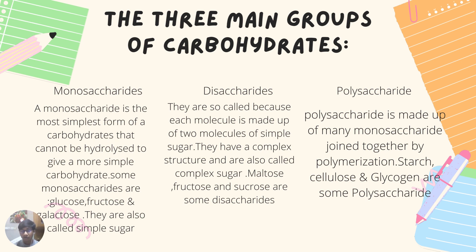Disaccharides are also known as complex sugars, and each molecule is made up of two molecules of simple sugars. Maltose, lactose, and sucrose are some disaccharides. Polysaccharides are made up of many monosaccharide molecules joined together by the process of polymerization; starch, cellulose, and glycogen are some examples.